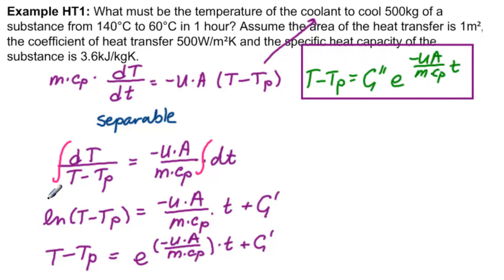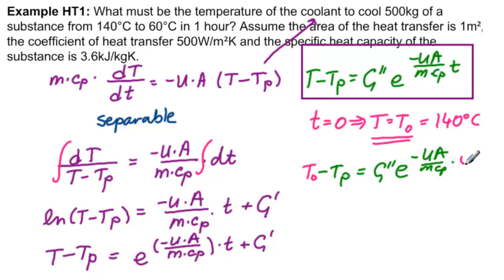We're going to put in our initial conditions. Initial means t equals zero. At t equals zero, we have temperature is T0, and in our case it is 140 degrees Celsius. Right now we're just going to use this, and when we get to the end we will put in all our numbers and check all our units. So we are solving for C double prime, the constant of integration. We have T0 minus TP equals C double prime e to the minus UA over MCP times zero, so this is all one.